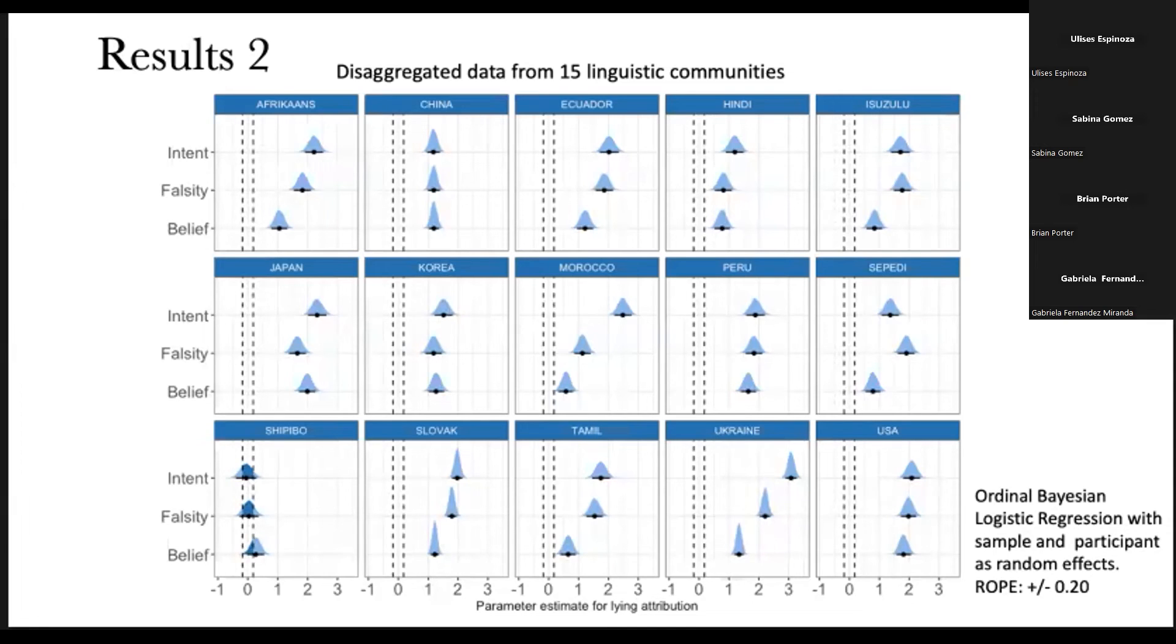Other patterns produce different combinations. Like in the case of Zulu, for instance, we have practically no difference between intent and falsity, but beliefs are clearly the last one, or the less relevant for the prototype.